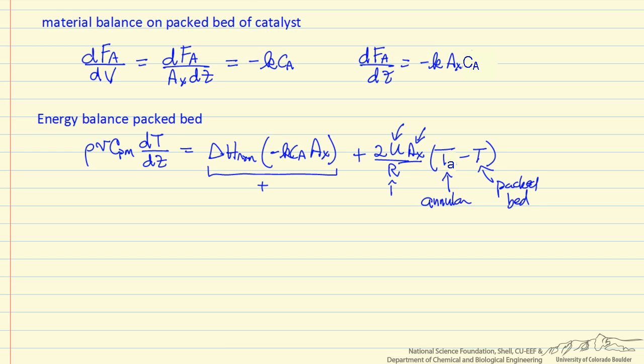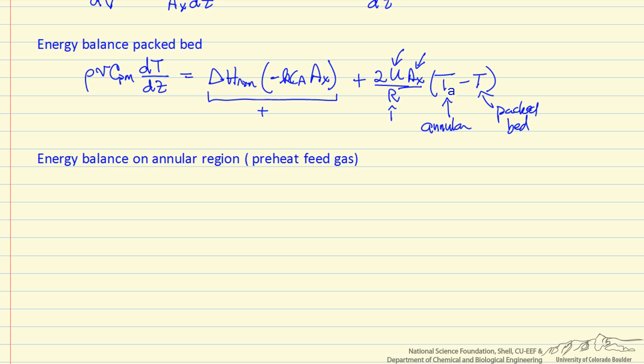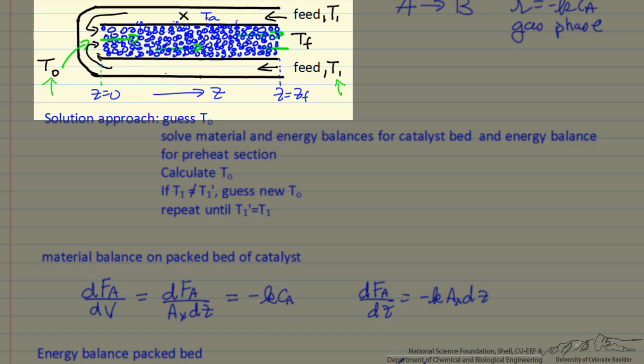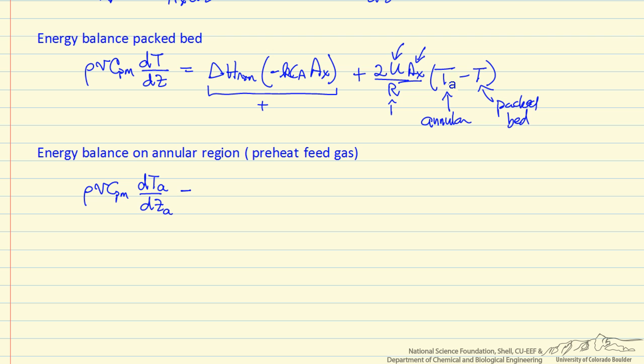And so then we need as our final balance, a balance on the annular region. This is of similar form except we don't have any reaction in that region, so we have a density, a volumetric flow rate, and same mass heat capacity, change in temperature A. But I'm going to call this ZA, so this is where we have to be careful. ZA means moving in this direction, so ZA equals zero here, and then it increases as we move to the left, because that's the direction of flow. Then the term on the right side is the heat transfer term, and that's the only term that we have for heat exchange, there's no reaction.